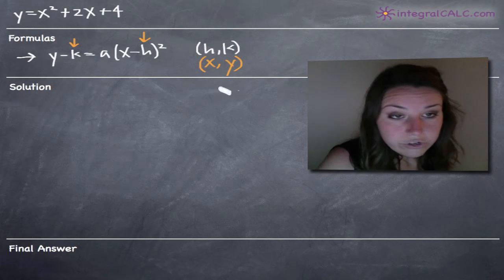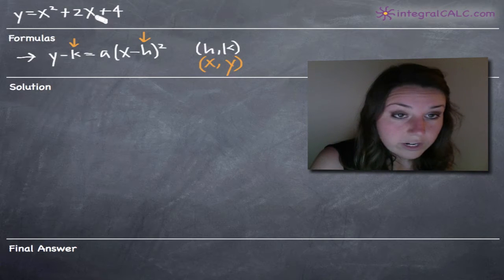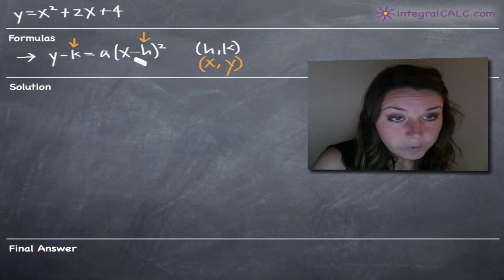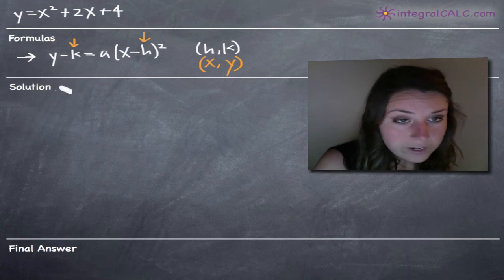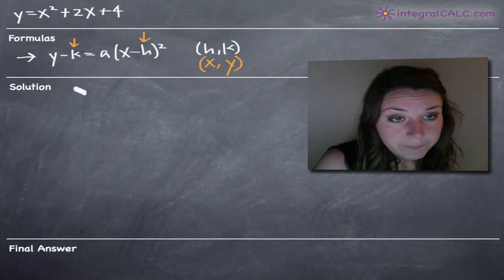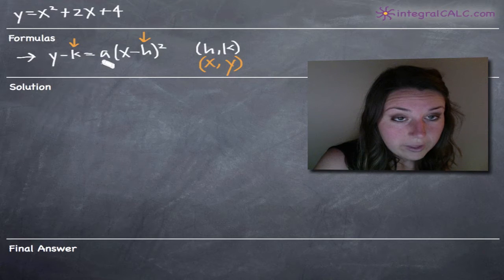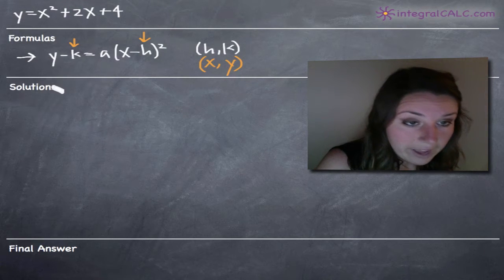In order to convert our equation into the form given in this formula, the first thing that we'll want to do is complete the square with respect to our x variables.